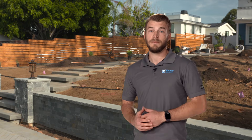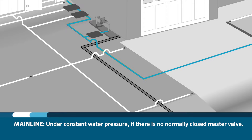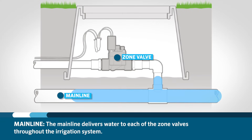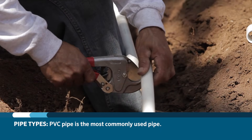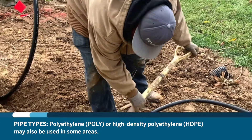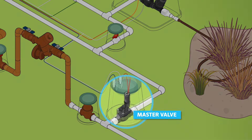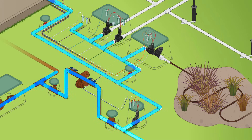Downstream of the master valve and flow sensor is the sprinkler mainline — the largest pipe in the irrigation system. If there is no master valve, this pipe is typically under constant water pressure at all times, 24/7. The mainline delivers water to each of the zone valves throughout the irrigation system. PVC pipe is the most commonly used pipe for this, but in some areas polyethylene, also known as poly, or high-density polyethylene or HDPE might be used. If a normally closed master valve is installed, the mainline only remains under pressure during scheduled irrigation cycles.